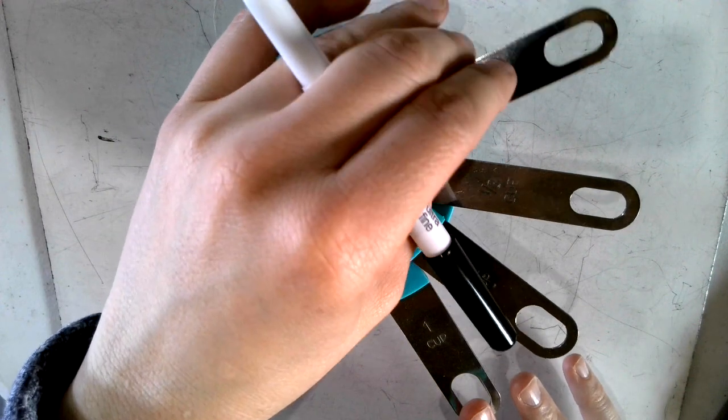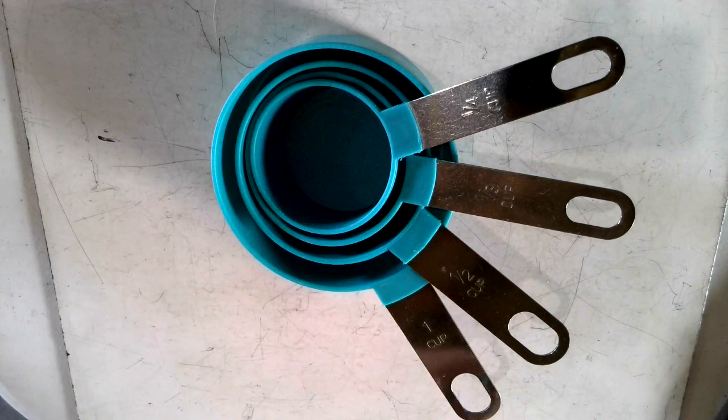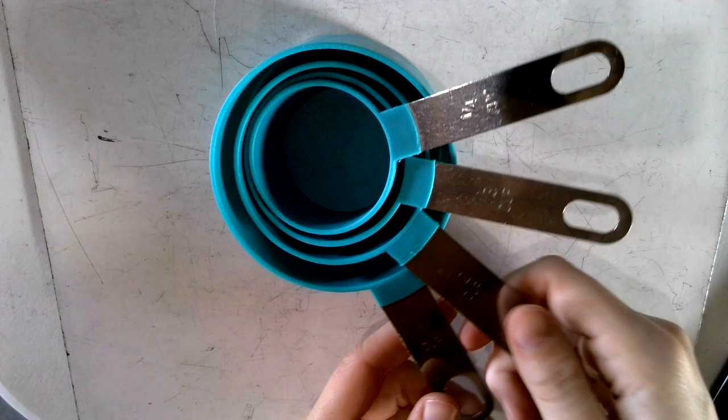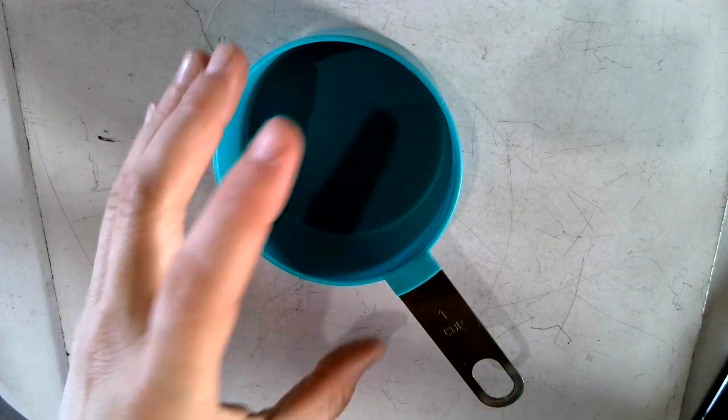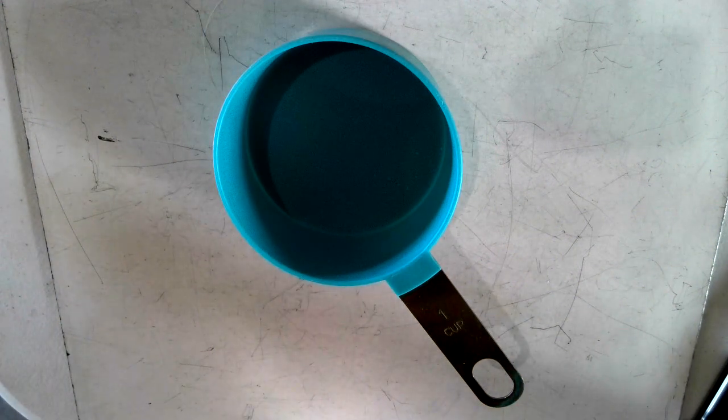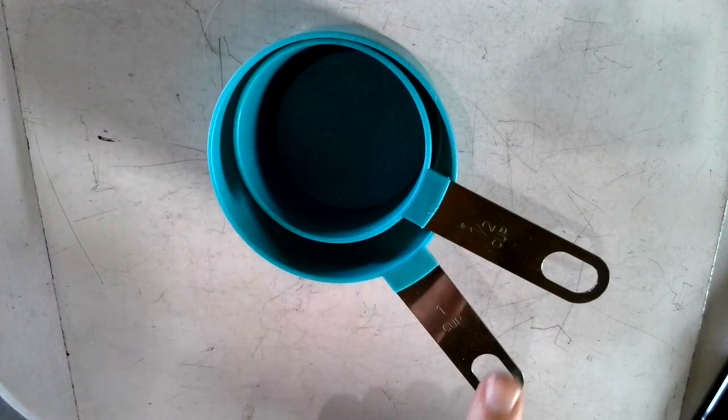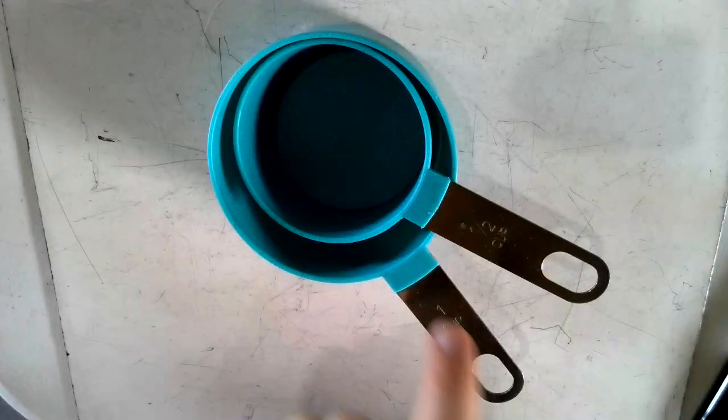This bottom one is the biggest measuring cup that there is, and that's the one cup. These are the small ones that you have in your drawer. Then you have the half cup, and a half cup and a half cup make one full cup.